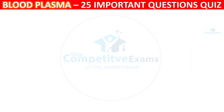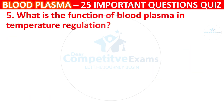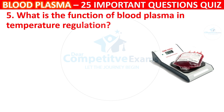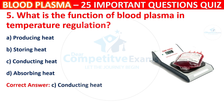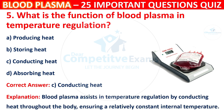Question 5: What is the function of Blood Plasma in temperature regulation? Your options are Producing heat, Storing heat, Conducting heat, or Absorbing heat. The correct answer is C, i.e. Conducting heat. Blood Plasma assists in temperature regulation by conducting heat throughout the body, ensuring a relatively constant internal temperature.